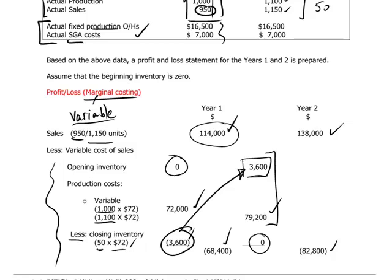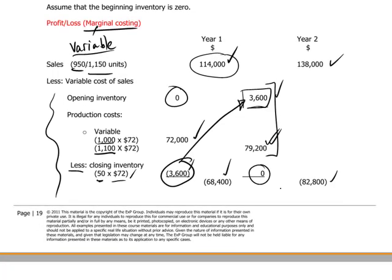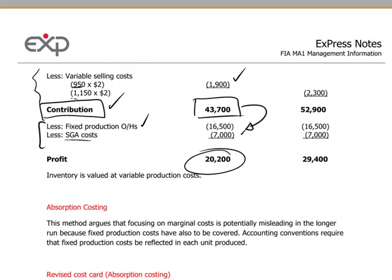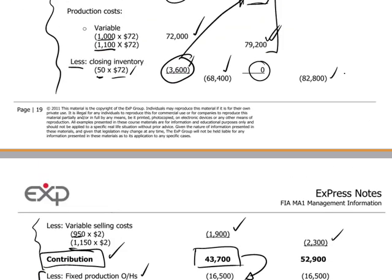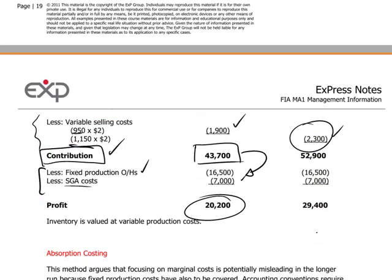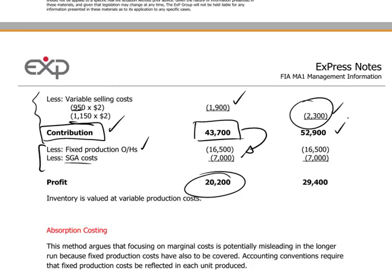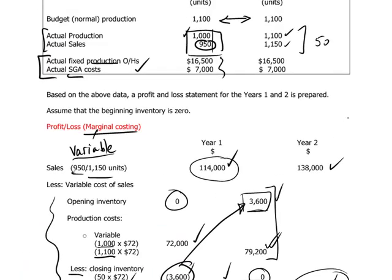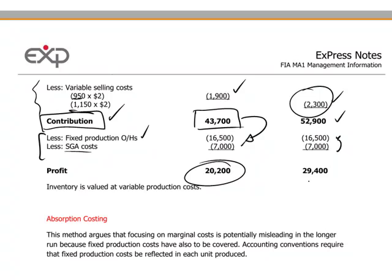So our variable production costs equal $82,800 — the sum of $3,600 and $79,200. The variable selling costs for 1,150 units come to $2,300. Our sales revenue minus all variable costs, both production and non-production, gives a contribution of $52,900. In year two, the fixed costs were again $16,500 and $7,000 — they didn't change. We deduct them at the bottom, giving us a profit figure under the marginal costing method of $29,400.